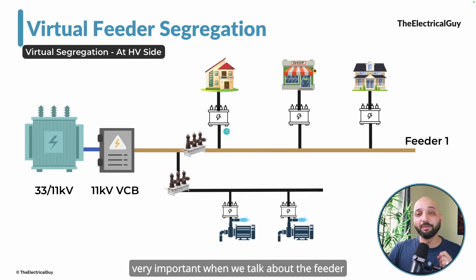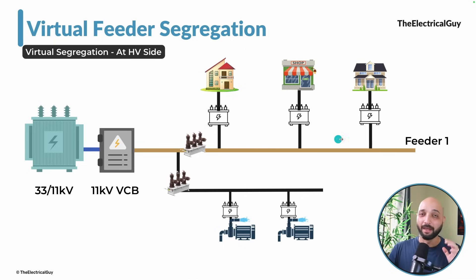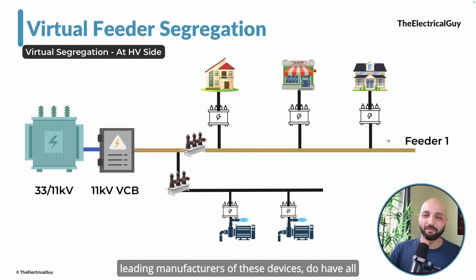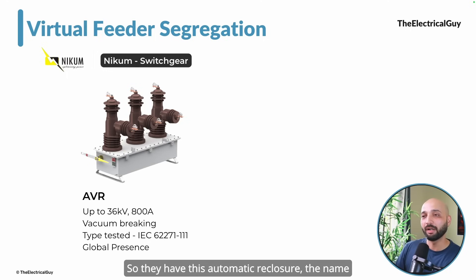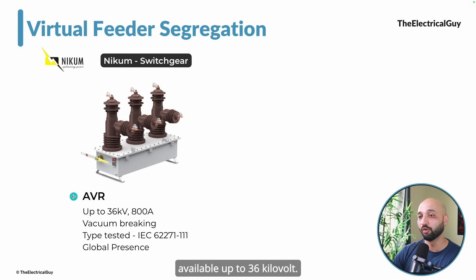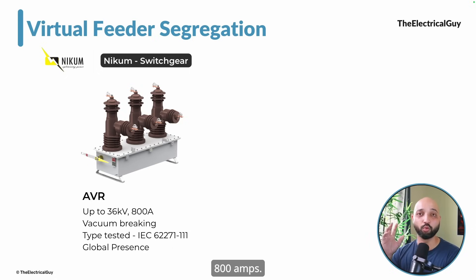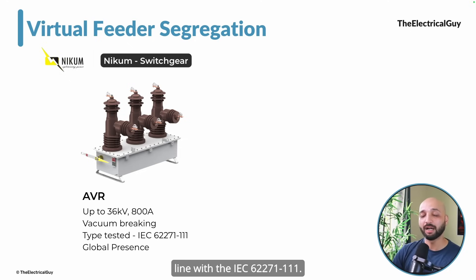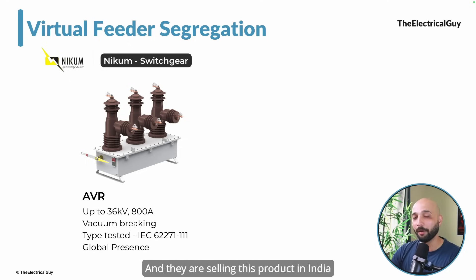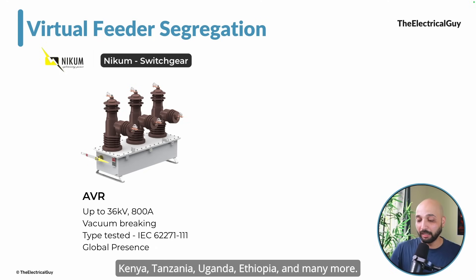These devices are critical for feeder segregation, and Nikum is one of the leading manufacturers. They have an automatic recloser called the AVR, which uses vacuum-based technology, available up to 36 kV with a rated normal current up to 800 amps. Being vacuum-based, it is highly reliable and fully type tested in line with IEC 62271-111. They sell this product in India and in East African countries like Kenya, Tanzania, Uganda, Ethiopia, and many more.